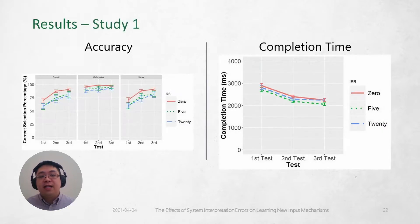In study one, where they had immediate feedback on their inputs, participants were less accurate during the memory tests at higher interpretation error rates, but they completed the test with similar times. This indicated that they took the errors less seriously since the system would provide feedback immediately whenever an error occurred.